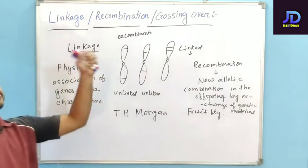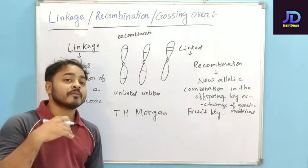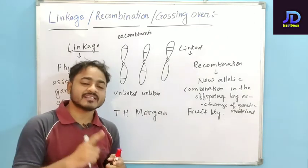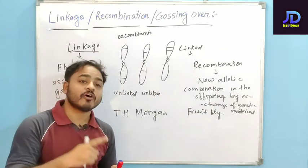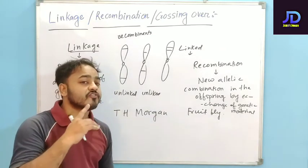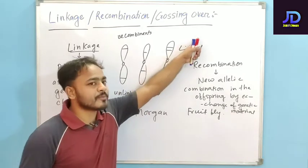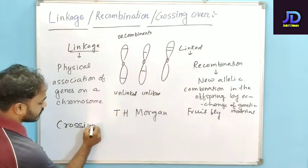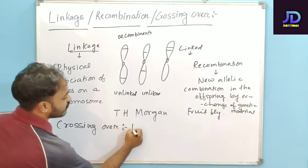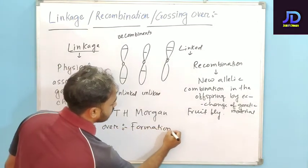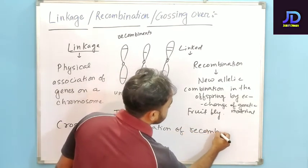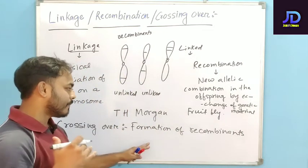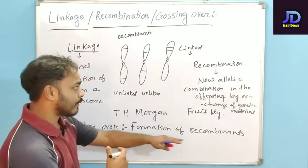Now let's come to crossing over. Crossing over is the process of exchange of genetic material, or you can say it is the process of formation of recombinants. Crossing over is the formation of recombinants — the process of formation of recombinants.